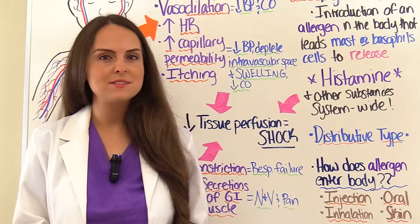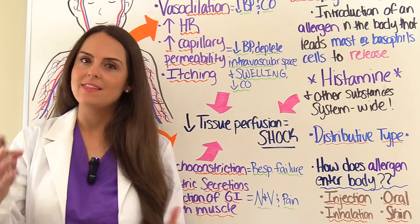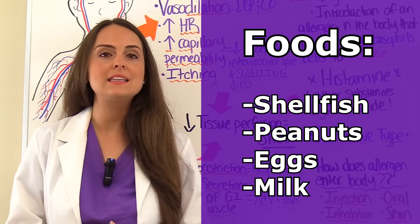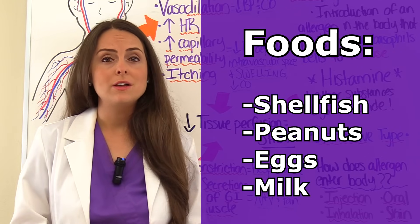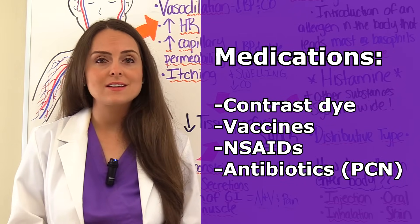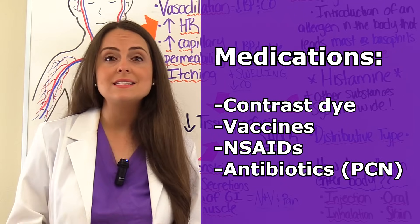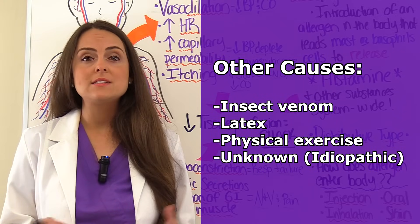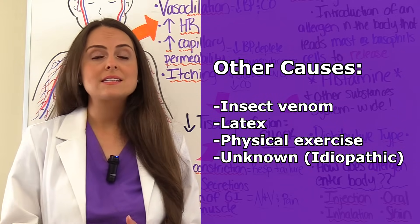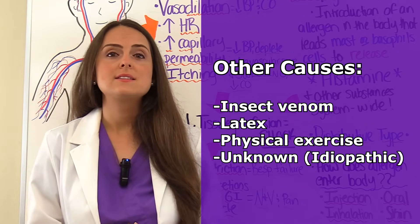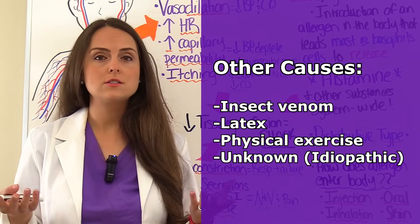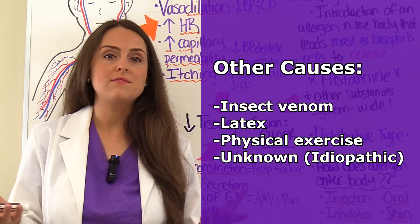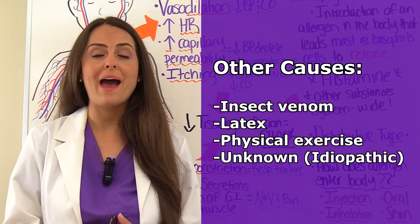Some known substances that cause anaphylaxis include foods such as shellfish, peanuts, eggs, and milk; medications like IV contrast dye, vaccines, NSAIDs, and antibiotics — specifically penicillin; insect venom like bee stings; latex; and physical exercise. Some people's anaphylaxis is triggered by exercise. There are also cases where we just don't know the cause, which we refer to as idiopathic.